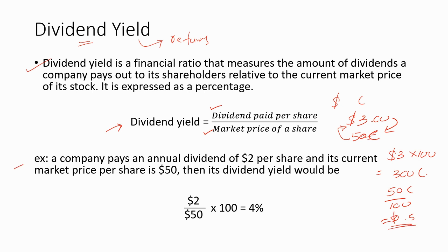Now let's do this example. A company pays an annual dividend of $2 per share and its current market price per share is $50. The dividend yield would be $2 divided by $50, multiplied by 100%, giving a dividend yield of 4%.